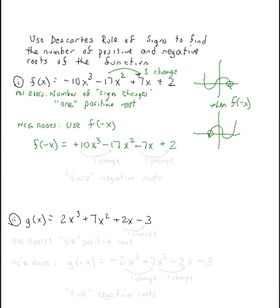Now let's take a look at the number of sign changes that occurred here. From ten to negative seventeen, we have one change. From negative seventeen to negative seven, no sign change at all. From negative seven to positive two, we have another sign change.